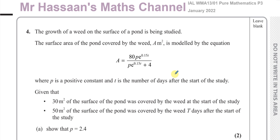The growth of a weed on the surface of a pond is being studied. The surface area of the pond covered by the weed, A meter squared, is modelled by the equation: A equals 80 times P·e to the power of 0.15t, over P·e to the power of 0.15t plus 4, where P is a positive constant and T is the number of days after the start of the study.